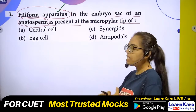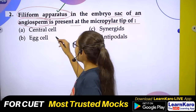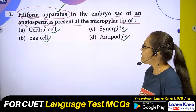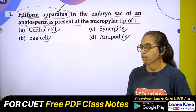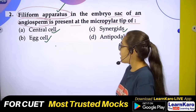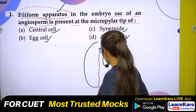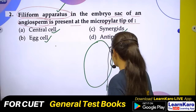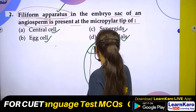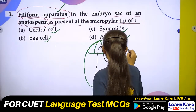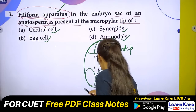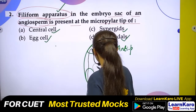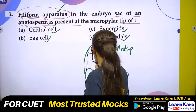You are asked about the location — which cell is it present in? The options are: Central cell, Synergid, Egg cell, and Antipodal. If you remember the embryo sac structure, there is a chalazal end and a micropylar end. At the chalazal end there were three Antipodal cells, and at the micropylar end there were two cells — the Synergids — with two polar nuclei in the central cell.